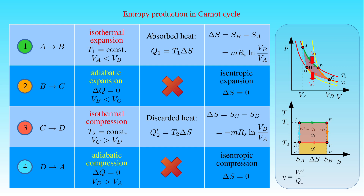As a result, the thermal efficiency eta of the Carnot cycle, defined by the ratio of work W' delivered to heat Q1 absorbed, equals the ratio of the area of rectangle A, B, C, D to the area of rectangle A, B, E, F. In the temperature-entropy diagram, the greater the difference between temperature T1 of the heat source and temperature T2 of the cold sink, the greater the ratio of the rectangular areas becomes. This diagram illustrates that the efficiency eta is given by (T1 minus T2) divided by T1.